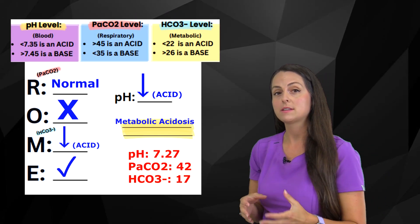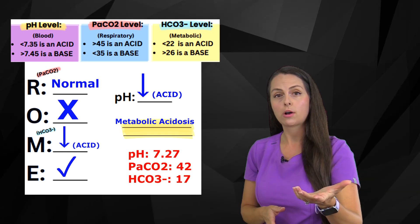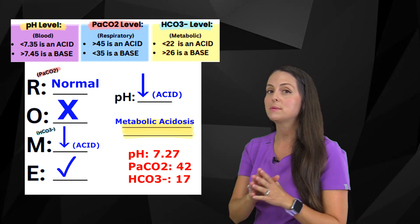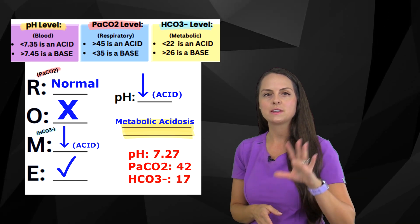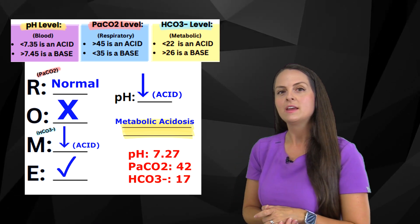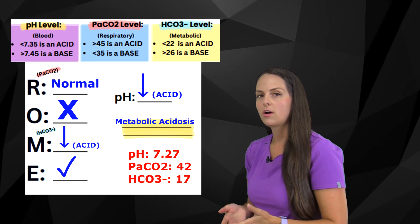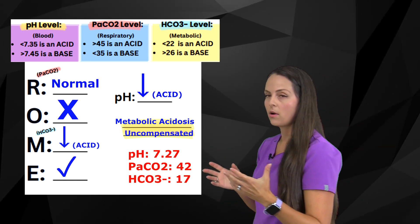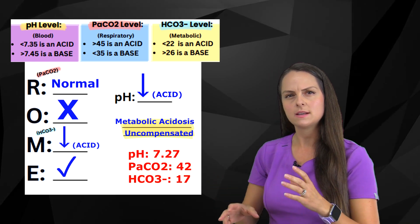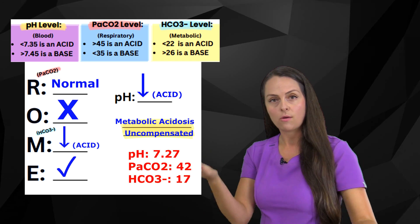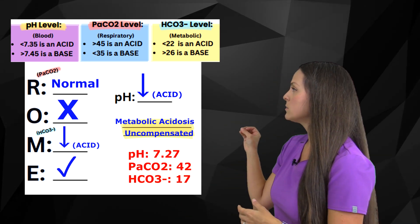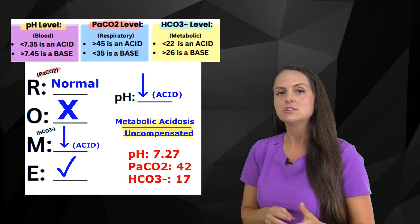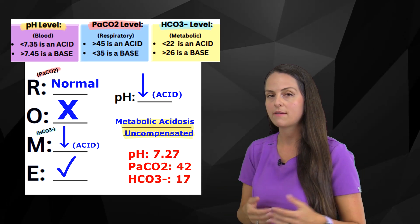Now we check for compensation. We don't have full compensation because the blood pH is abnormal — it must be normal for full compensation. Since we have a metabolic problem, we look at the respiratory system to see if it's trying to compensate by making the PaCO2 less than 35. It did not — the PaCO2 was normal. So this is uncompensated metabolic acidosis.